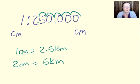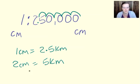Therefore two centimetres equals five kilometres. One Mars bar costs two pounds fifty, two Mars bars costs five pounds — so there's your answer.